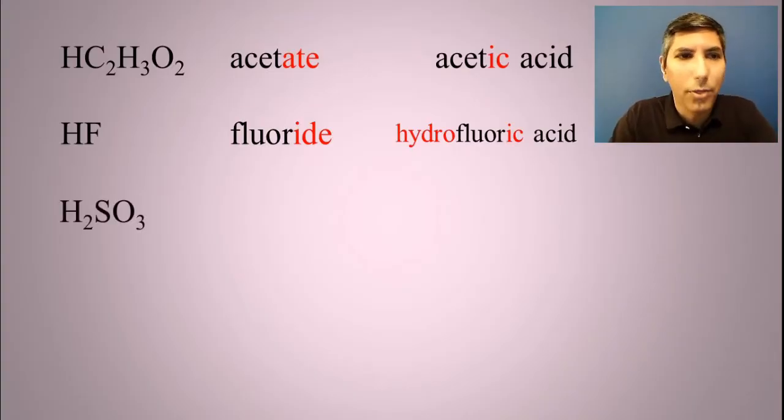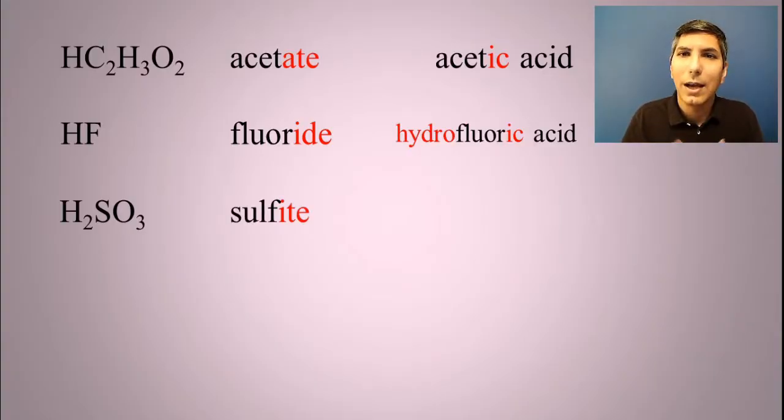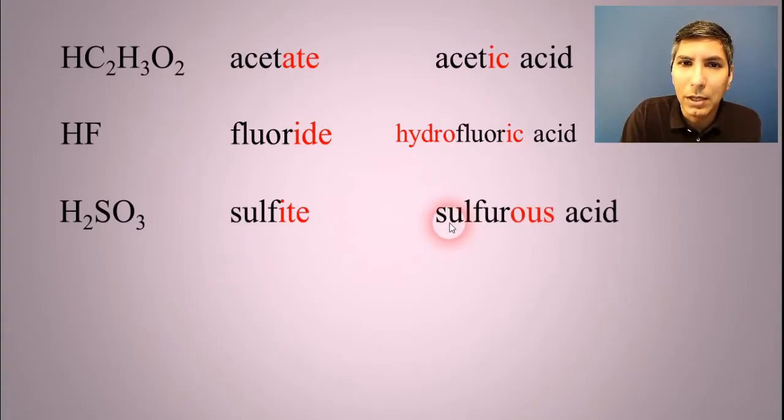How about H2SO3? Once again, focus on that SO3. That's the polyatomic ion that we call sulfite. So ite changes to ous, as you might recall. So it looks like it will be called sulfous acid. Well, for sulfur-containing compounds, sulfur-containing acids, and for phosphorus-containing acids too, we actually stick an extra syllable on there to make it sound a little bit better. So it's not sulfous, it's actually sulfurous acid.